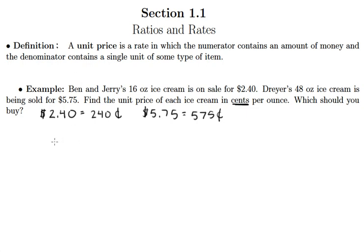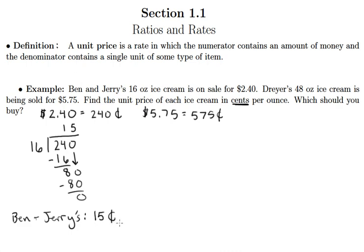And so we have 240 as the dividend and 16 as the divisor. So 16 goes into 24 one time. One times 16 is of course 16. We get a remainder of 8, drop down our zero, and then 16 goes into 80 five times. And it turns out 5 times 16 is exactly 80. So that's nice. So what we have here is that for Ben and Jerry's the unit price is 15 cents per ounce.